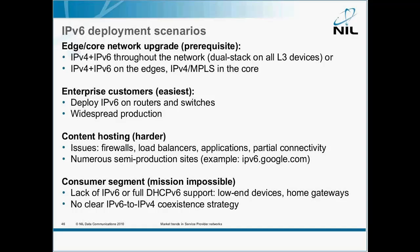If you are a service provider and you want to support your customers, first you need to upgrade your gear. Then you can go for native IPv6, where you run v4 and v6 throughout the network, or maybe even more interesting, you just run IPv4 in the core and transport IPv6 over MPLS.